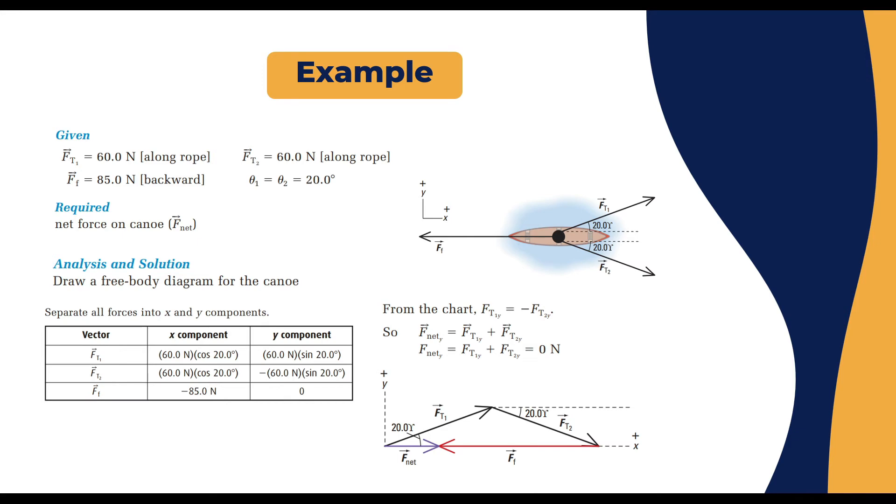Now let's list down the vectors, the x components and y components to be able to solve the question systematically. F_T1 is 60 newton cosine 20 so you analyze this vector. Cosine θ will give you the x-axis vector and sine θ would give you the y-axis vector.